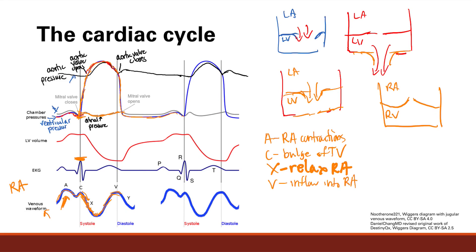That continues until the tricuspid valve finally opens again. When it opens, blood flows from the right atrium into the right ventricle, emptying the right atrium — that's the Y descent. So X is the decrease because the atrium is relaxing, and Y is the decrease because it's actually emptying into the right ventricle.